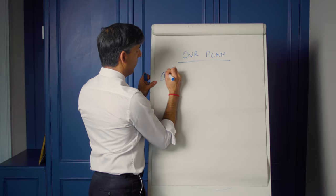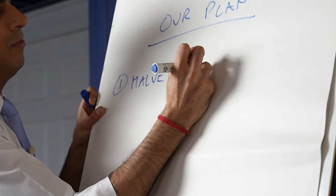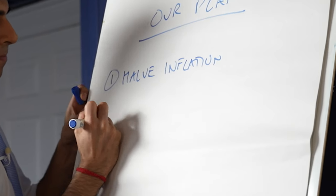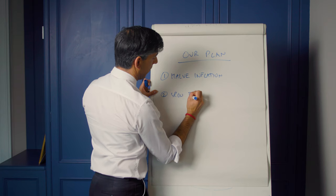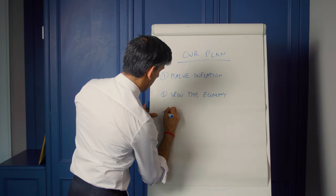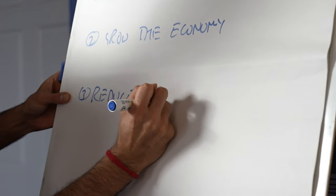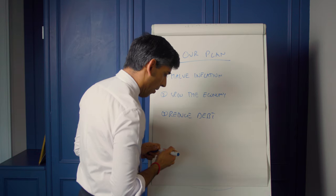You've heard me talk about this a lot. It has three elements: to halve inflation, grow the economy, and reduce debt. So how are we doing?